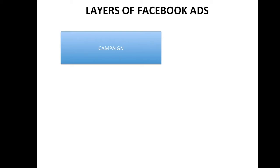Let's talk about the layers of Facebook ads. The first major layer is the campaign. Think of a campaign as the universal objective — basically, what is your ad about? What is the purpose of your ad? Why are you running it? Are you running it to get conversions, sales, views, leads? Whatever the main purpose of your ad is, that's what the campaign is. The campaign runs everything — it is the first major layer.